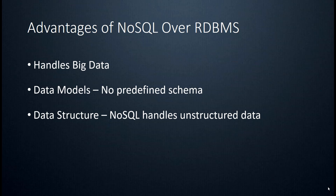This brings us to the next advantage: the data structure. Not only do you not have to define your tables and columns — there are no tables and columns — but you don't even have to know your data structure in advance. You should at least plan out how your data is going to look and handle that on the application layer. There are object-relational mappers that we can use to create a schema on the application layer.